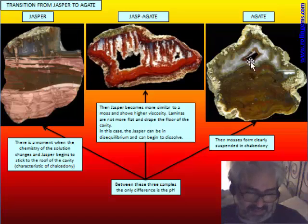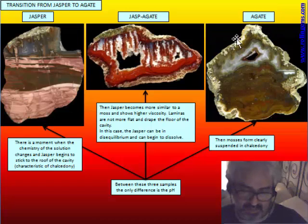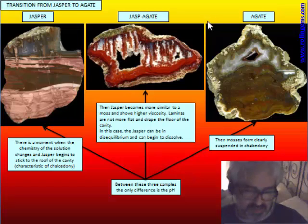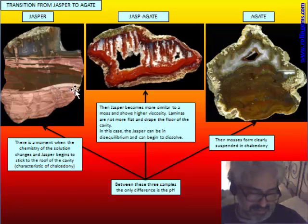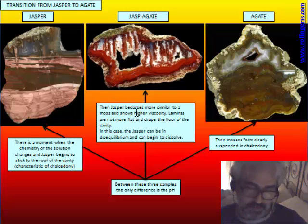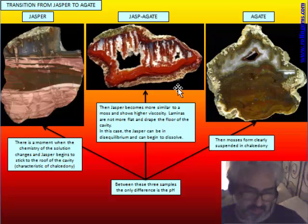These three kinds of formations are almost the same stuff with the same composition — what is changing is only the pH. There is a small change in chemistry, but the composition is the same. We know that between chalcedony and jasper there is no difference in bulk chemistry — there is only a small difference in the shape of the microcrystals. So this is a continuum, and jasperagate is just in the middle.